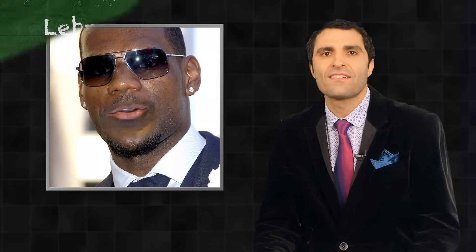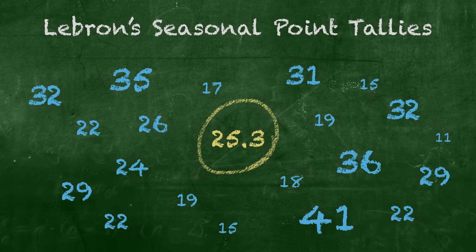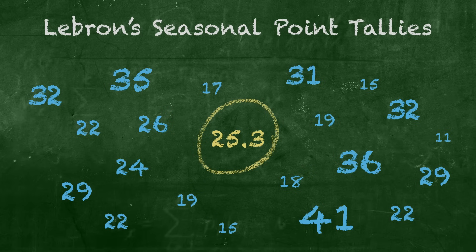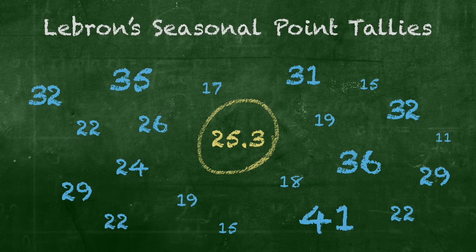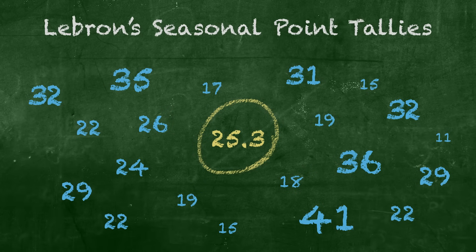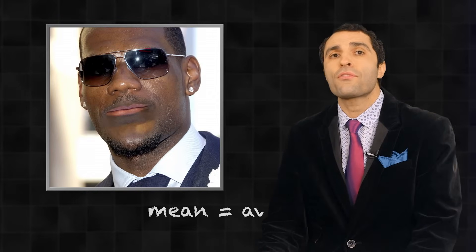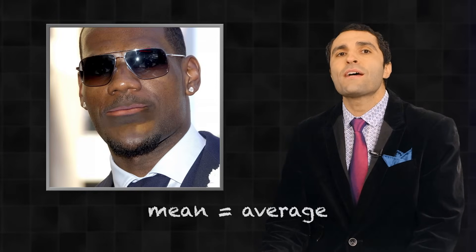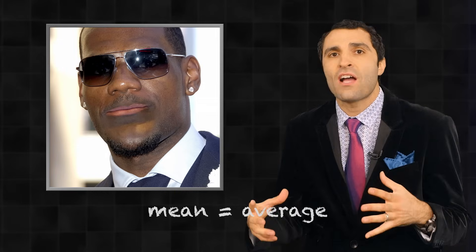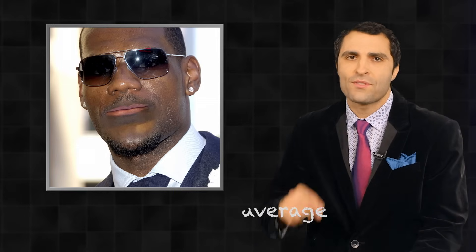That's a lot of points. Yes, it is. Now, we know you're actually not scoring exactly 25.3 points in a game, so how does that number work? 25.3 points, aside from being an impressive number, is incredibly useful because it gives us an idea of what I typically score in any given game. In other words, your mean of 25.3 points per game is the best representative snapshot of your nightly point totals for that particular season. Now you're speaking my language.